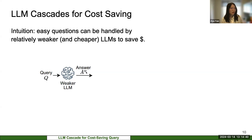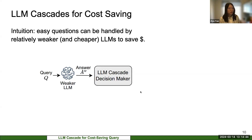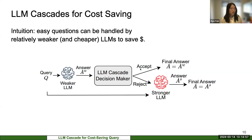Specifically, whenever the user sends a query, we assume it is first sent to the weaker LM, which gives us an answer. We then introduce the key component: the LM cascade decision maker. It decides whether to accept this answer as the final answer. If it accepts, the cost is only the cost induced by the weaker LM. But if the decision maker feels the answer may not be reliable, it passes the question to the stronger LM, and the final cost is the cost of calling both the weaker and stronger LMs.